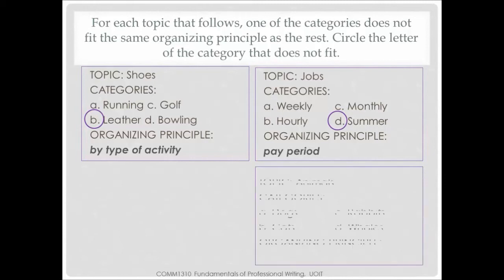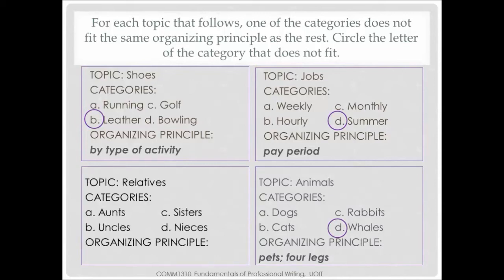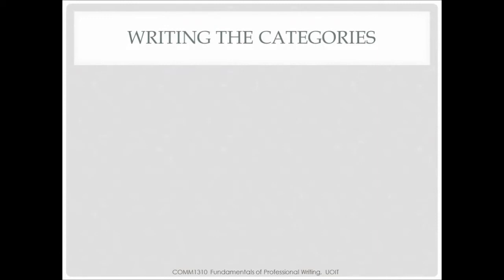The third topic is animals, with categories: dogs, rabbits, cats, and whales. There are a few possible organizing principles — pets, animals with four legs, animals with fur, or land animals. In all of these cases, whales do not belong. The fourth topic is relatives, with categories: aunts, sisters, uncles, and nieces. The organizing principle is female relatives, so uncles does not belong because uncles are male relatives. As you're organizing, make sure to choose useful categories and then provide specific examples for those categories.